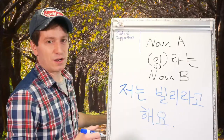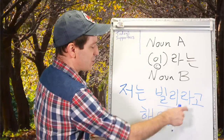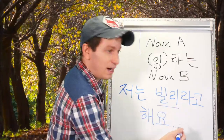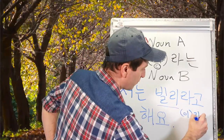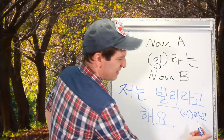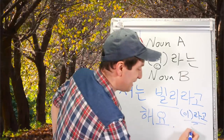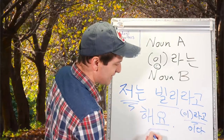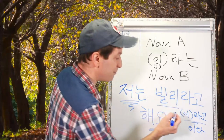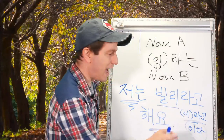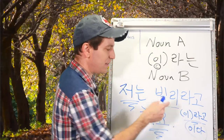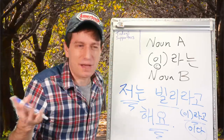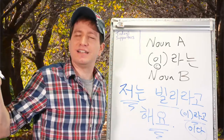저는 빌리라고 해요 — just for example. So this is the 이라고 form, to say 이다, something is. As for me, I say I am — I am Billy. I call myself Billy. My name's Billy.